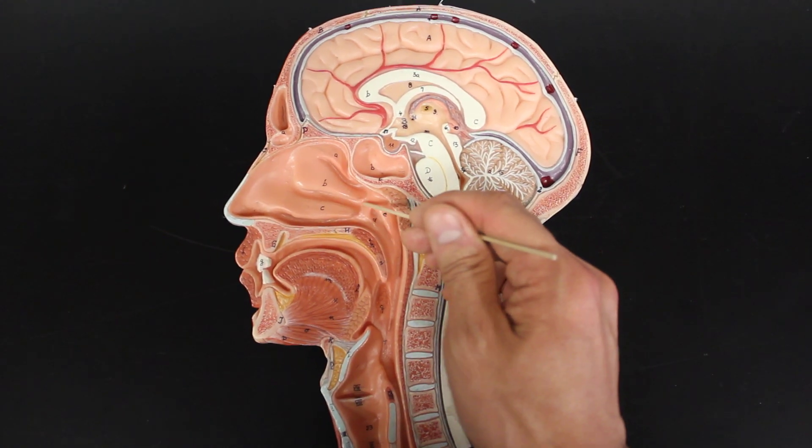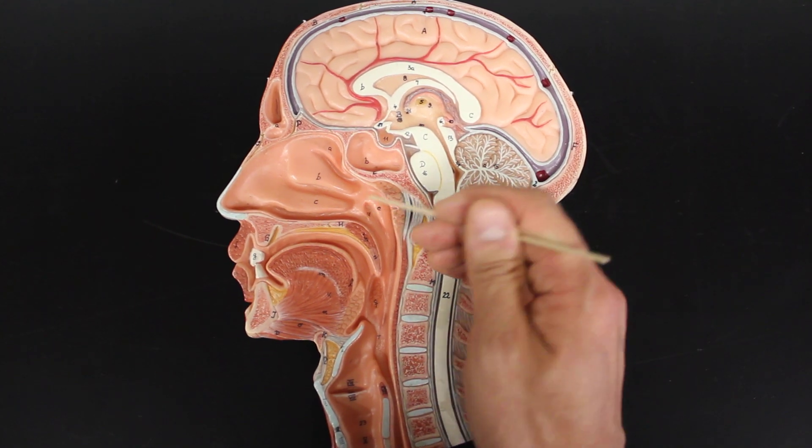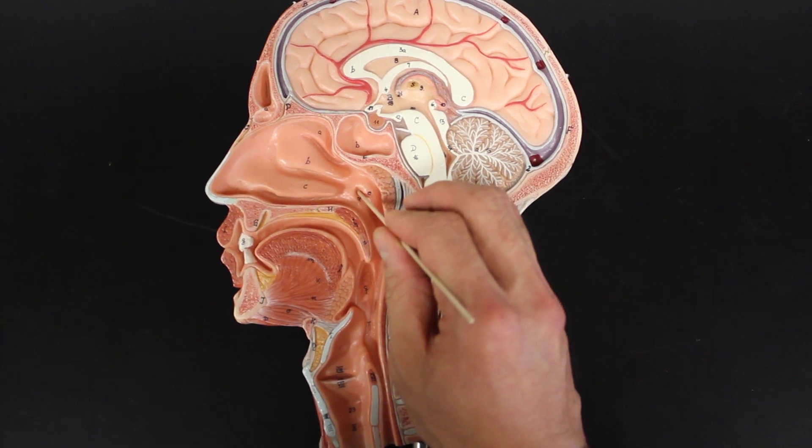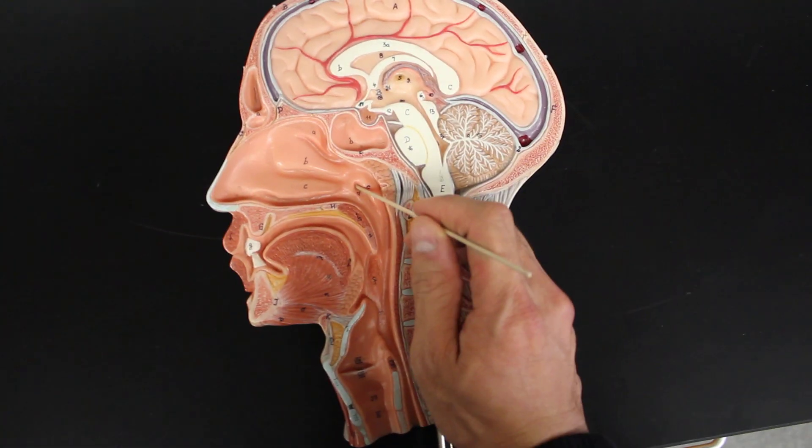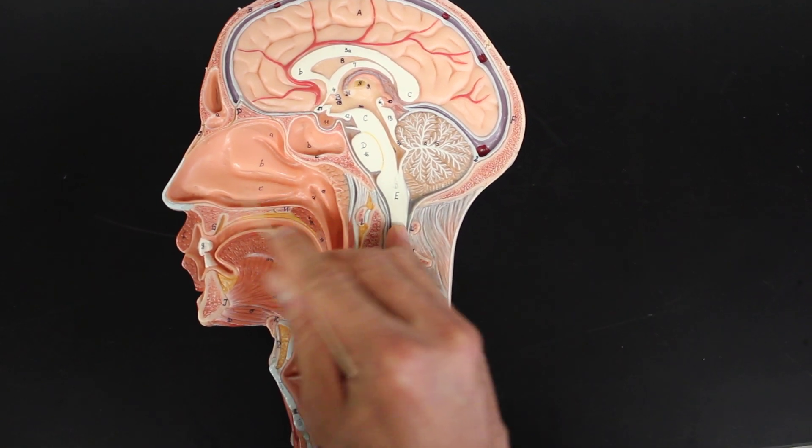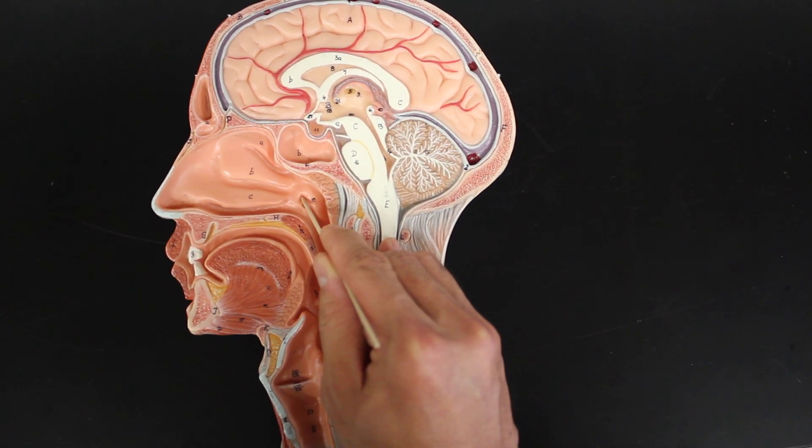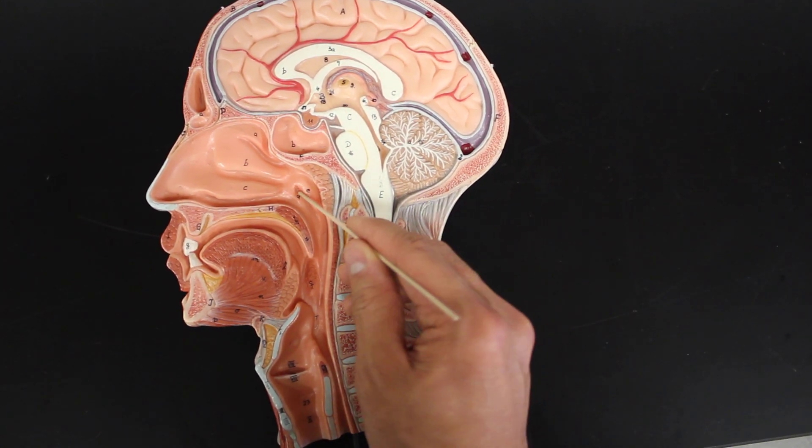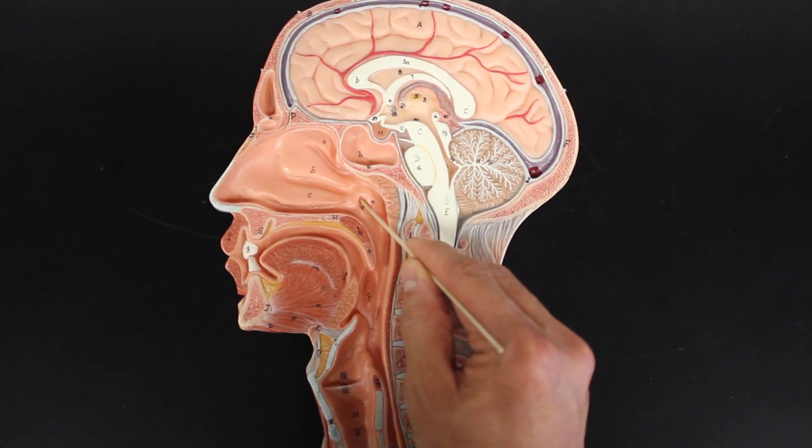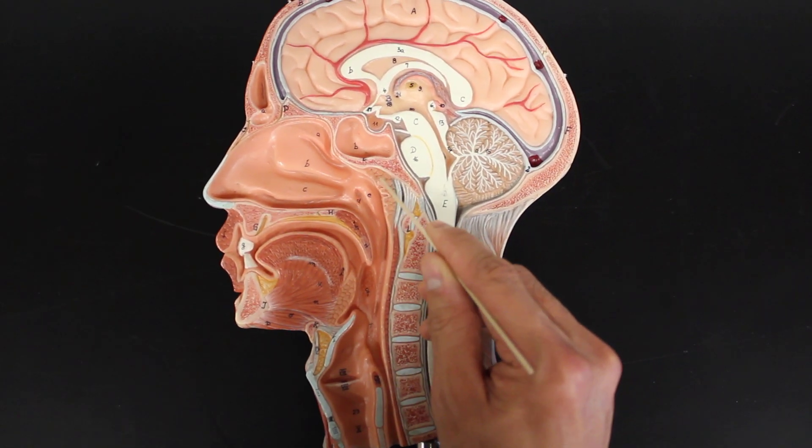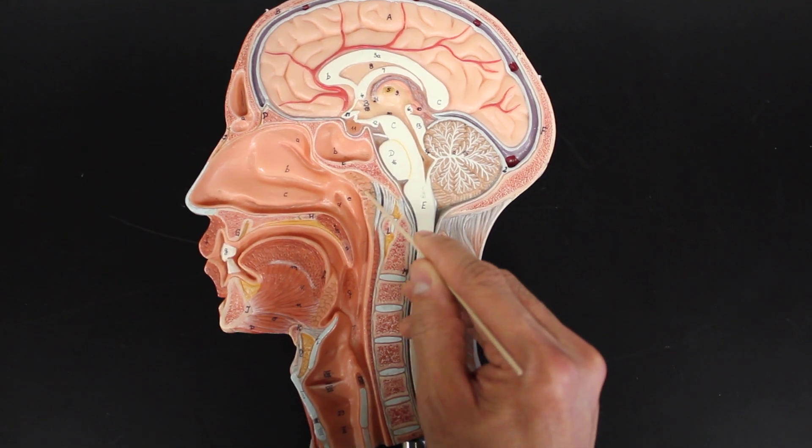Before we move on from the nasal pharynx, let's point out a couple structures here. The first is this little opening here. This little opening is the opening of the auditory tube, formerly known as the eustachian tube. You'll find that this goes out to the ear, and it helps equilibrate the pressure between your middle ear and your nasal cavities, or the external environment. That's why you have the ear popping. Behind that is this little tissue-like structure. That is the pharyngeal tonsils. This will help defend against any kind of pathogens.